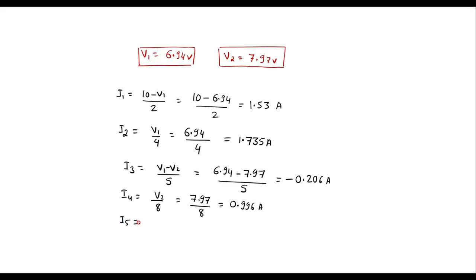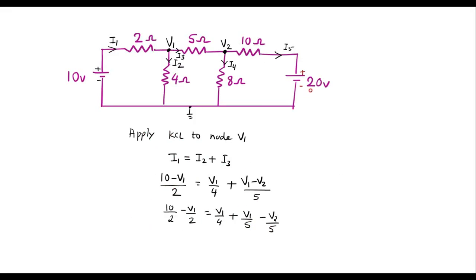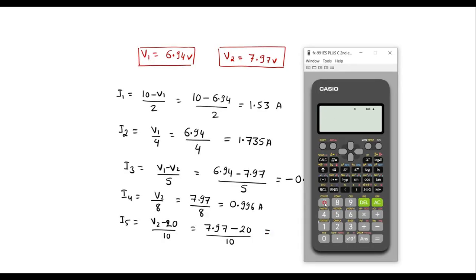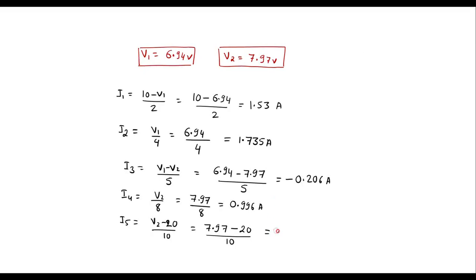Finally, I5 = (V2 − 20) / 10 = (7.97 − 20) / 10 = −12.03 / 10 = −1.203 A. Thus we have calculated all branch currents using node analysis. Thank you for watching.